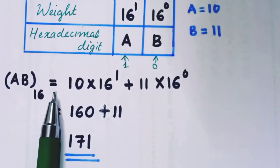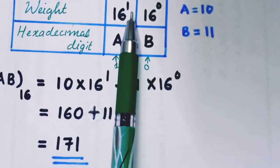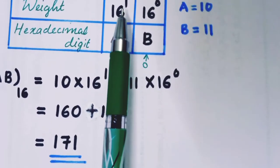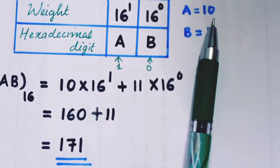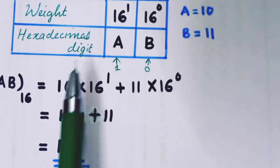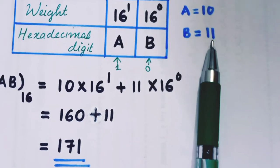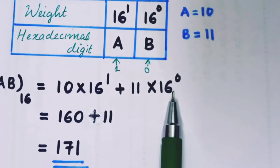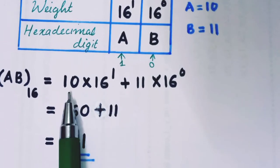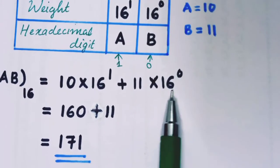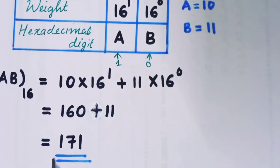The formula is: AB in base 16 equals (digit A × weight) + (digit B × weight). A = 10, and its weight is 16 raise to 1, so 10 × 16 raise to 1 = 160. Plus B = 11, and its weight is 16 raise to 0, so 11 × 1 = 11. Therefore 160 + 11 = 171.